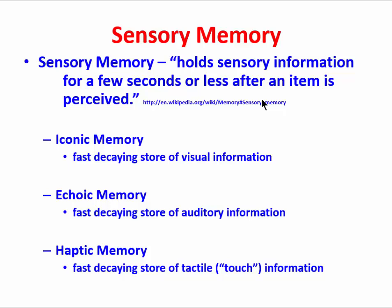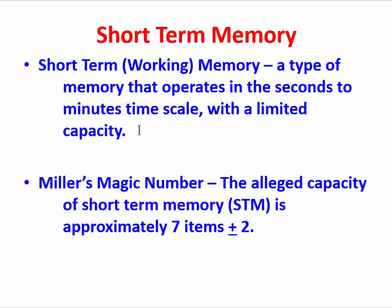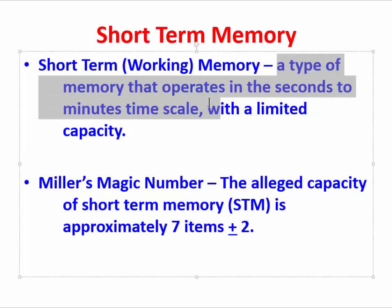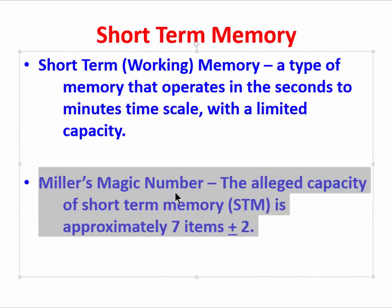Let's move on to the next stage: short-term memory, which we also call working memory. We can define it as a type of memory that operates in the seconds-to-minutes timescale with a very limited capacity. An important phenomenon here is Miller's magic number — the alleged capacity of short-term memory, sometimes abbreviated STM or WTM — which is approximately seven items in memory, plus or minus two. A typical healthy young person can recall from short-term or working memory something like between five and nine items.